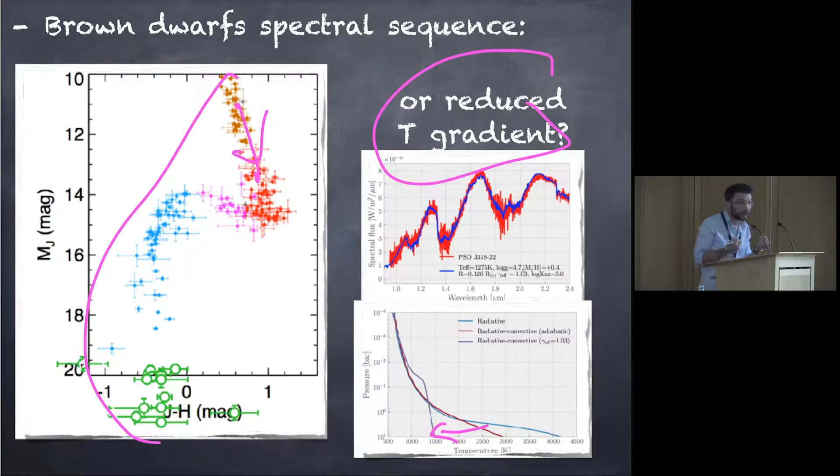It's also a bit counterintuitive, because usually convection should bring you to the adiabat, and here it's going to reduce the temperature gradient away from the adiabat. You kind of need an explanation for that.